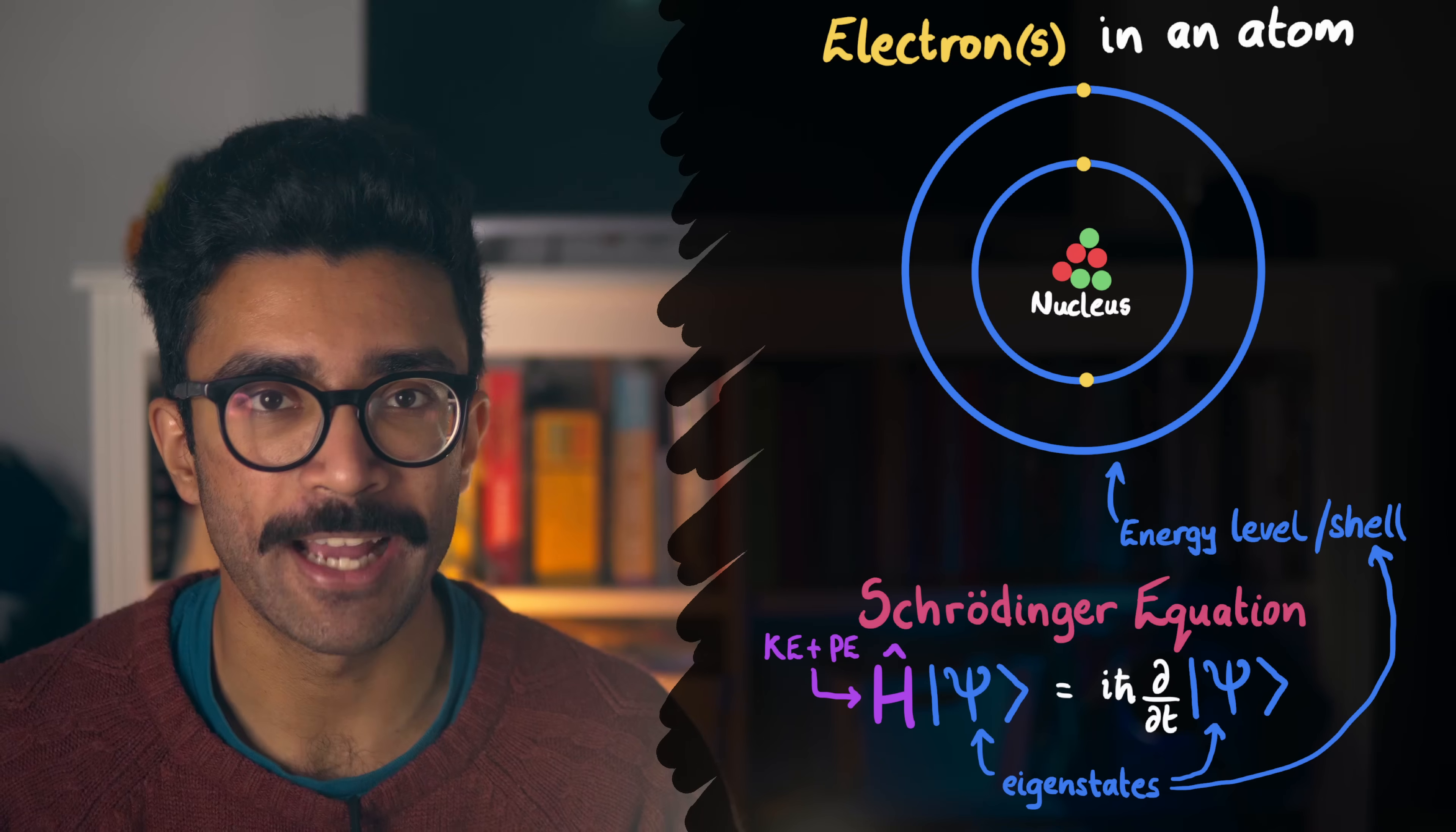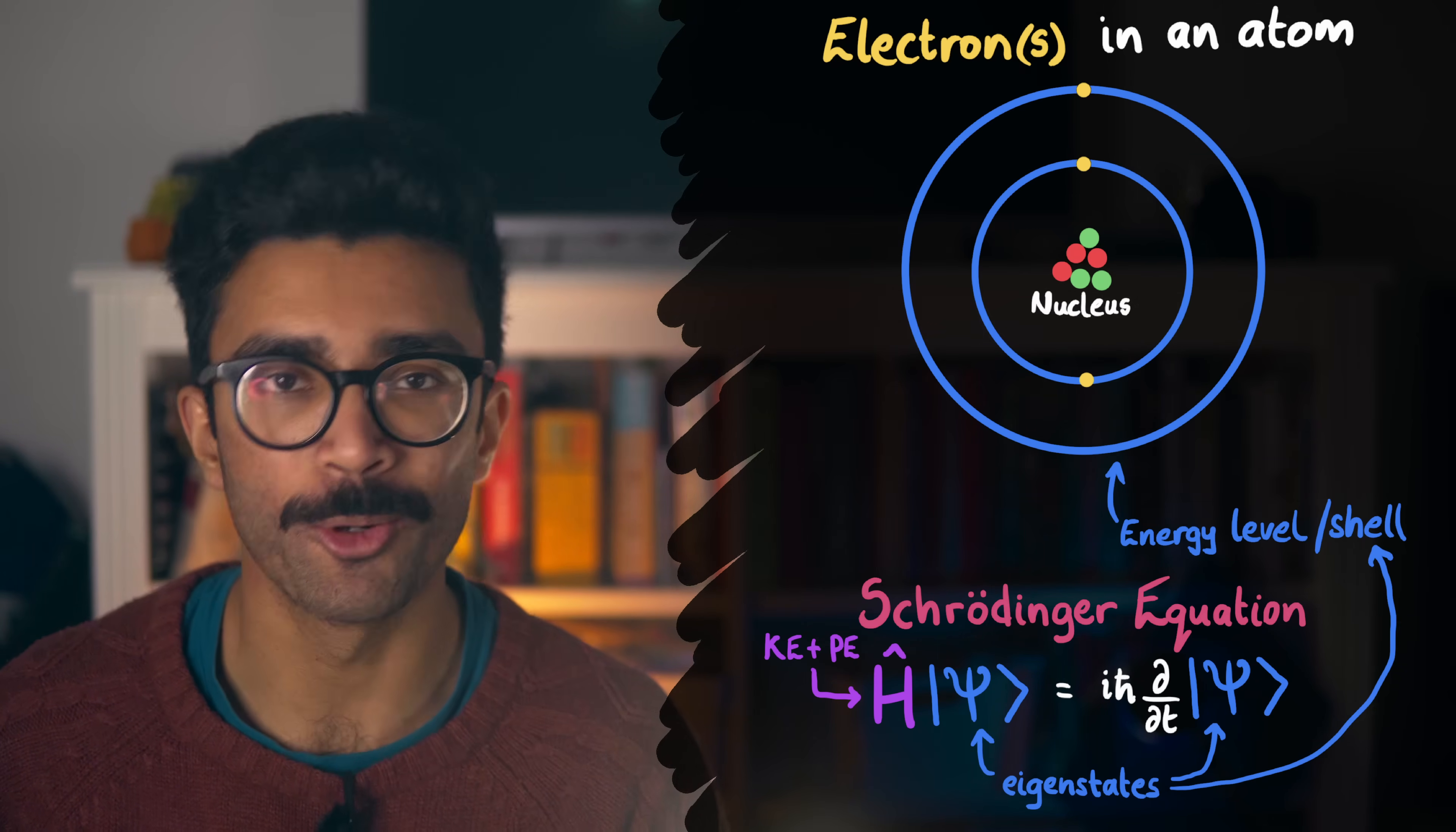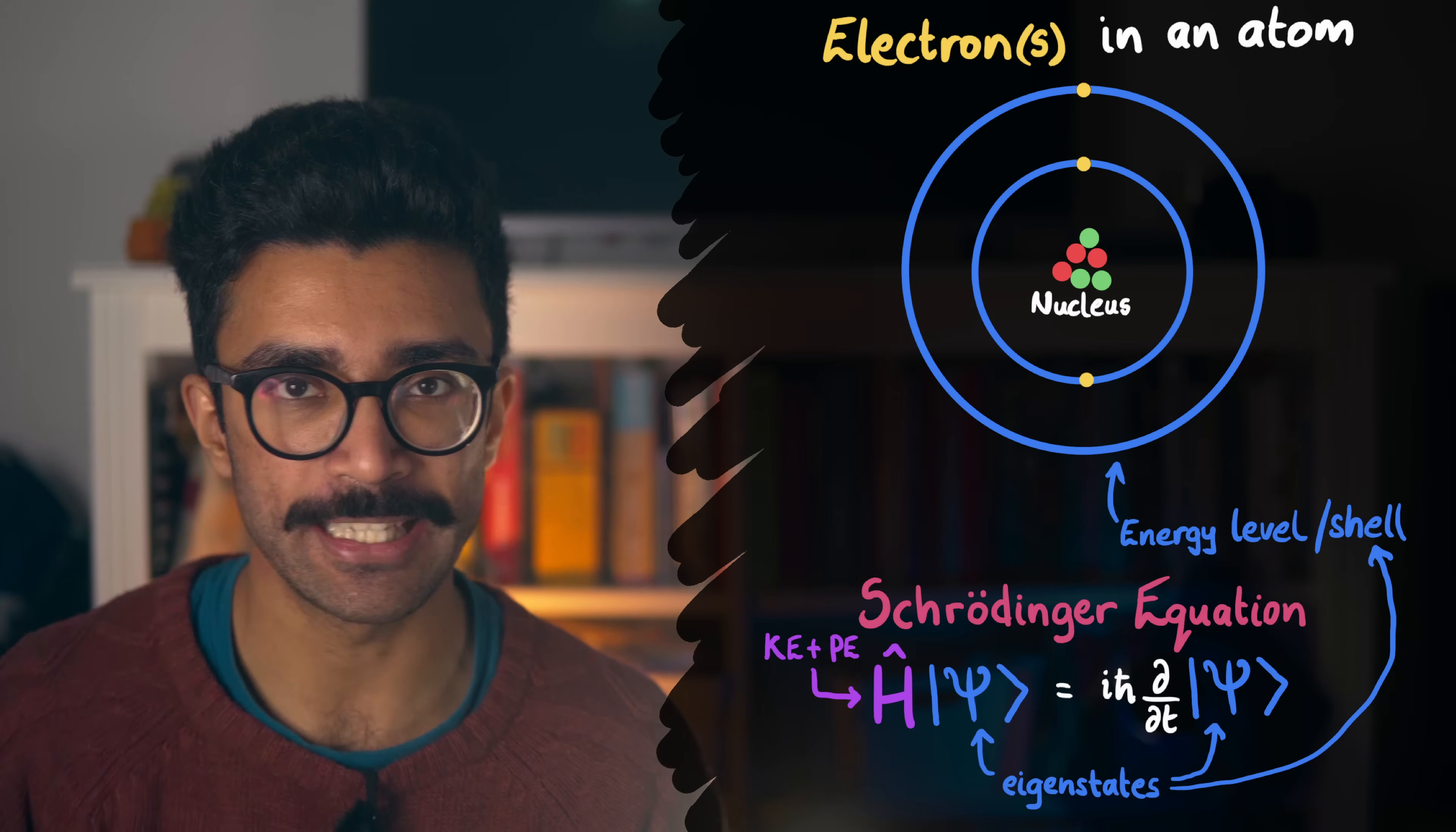For example, this equation will account for the kinetic energies of all the particles within the system, as well as all of the interactions between particles, that result in them having electric and other forms of potential energy relative to each other. We substitute in the terms that describe these energies into this term here, the Hamiltonian H. Then, we can solve this equation for the allowed energy levels that the electrons can occupy.